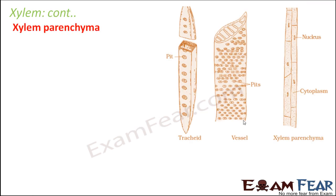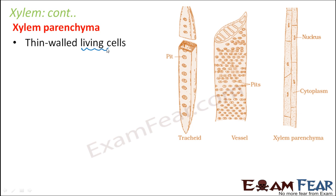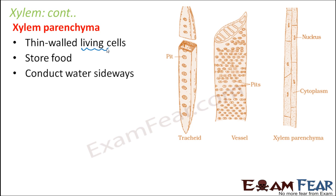The third component is xylem parenchyma. These are thin-walled living cells — parenchyma cells are living cells. In xylem, one of the components is parenchyma. They are generally thin-walled; the cell wall is made up of cellulose, so it is moderately rigid. They help in food storage — food storage is one of the important functions of parenchyma. They also conduct water sideways.